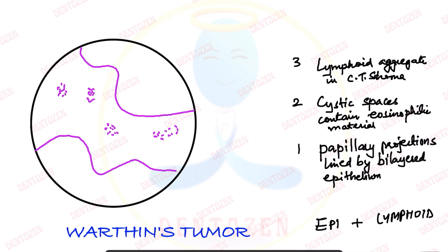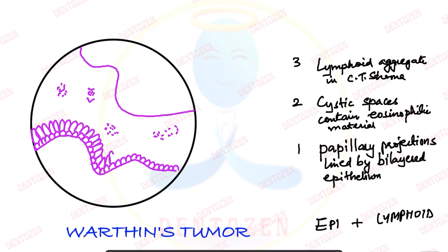Now let's draw the epithelium. One layer is made up of cuboidal cells projecting like this. The second layer is made up of tall columnar cells, which face towards the cystic lumen. All these inner cells are columnar cells. This is the projection on one side.